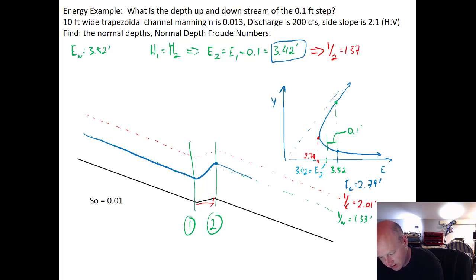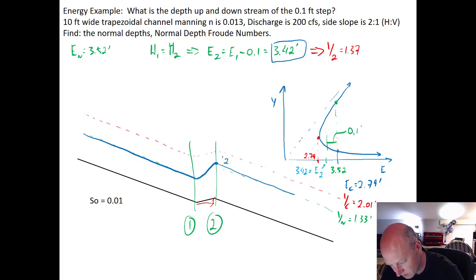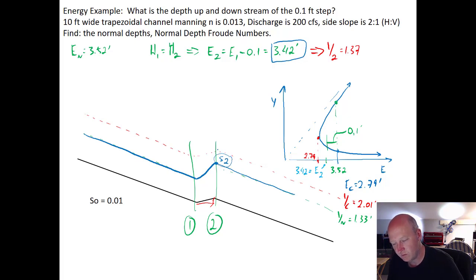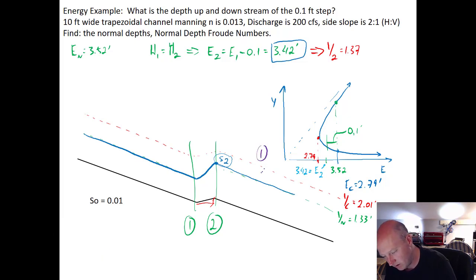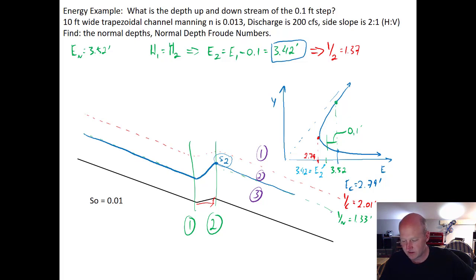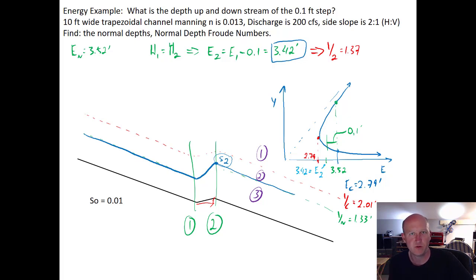The water surface profile goes up over the step and then comes back down, following an S2 curve. The three flow regions are delineated by critical depth, normal depth, and the channel base. In upcoming videos, we'll cover alternate depths more thoroughly, step-ups and bumps with energy, and hydraulic jumps.